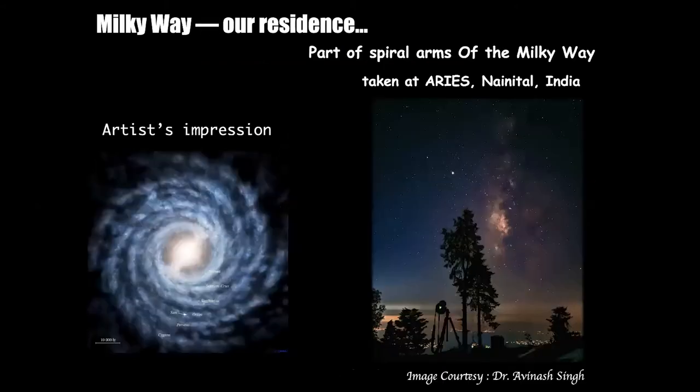Now our galaxy, the Milky Way, which hosts the solar system, is also a disk galaxy which has spiral arms. It can contain around 10 to the power of 11 stars. Since we are residing within it, we cannot see the full view, and the picture shown on the left is merely an artist's impression. Nevertheless, some part of the spiral arms of the Milky Way is visible to us. Here is a picture showing a part of the spiral structure.